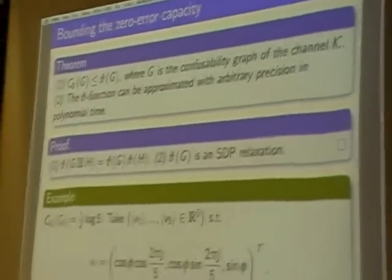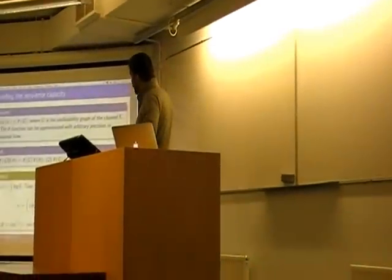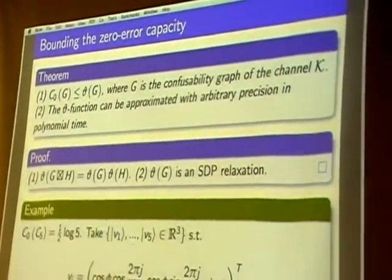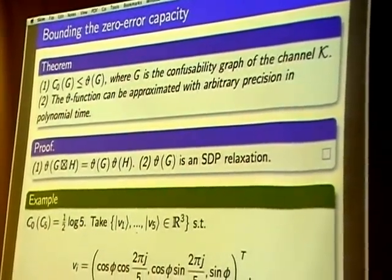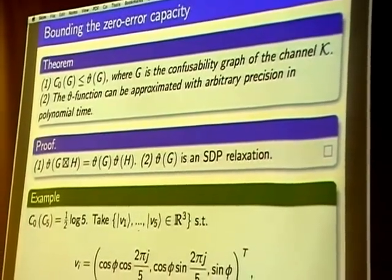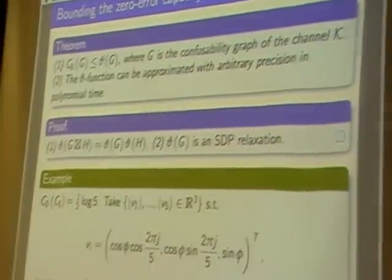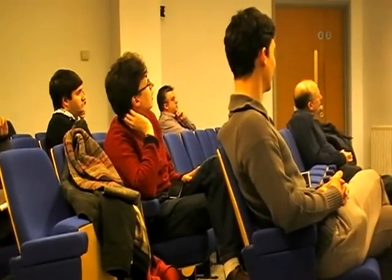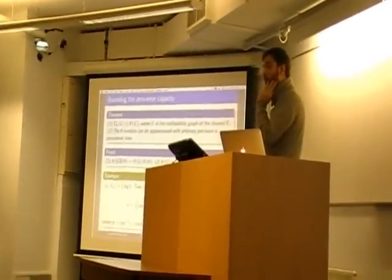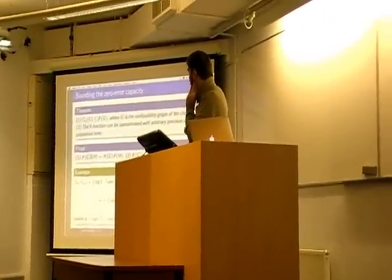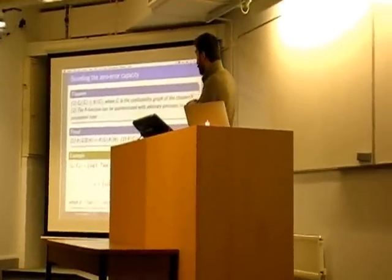Why is the Lovász theta function useful? First, it bounds the zero-error capacity in the asymptotic limit, not just the one-shot case. It was proven — by Lovász himself in 1979 using these techniques — that the capacity of the pentagon is exactly √5. The key fact is that the Lovász function is multiplicative with respect to the strong product. Moreover, this function can be approximated to arbitrary precision in polynomial time via semidefinite programming, which is another major reason for its importance.